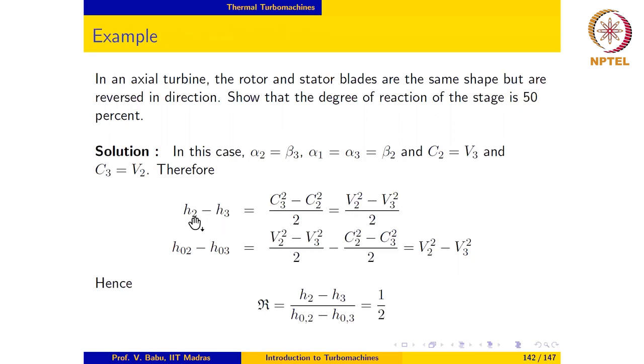Therefore the enthalpy change across the rotor, h2 minus h3, is C3 squared minus C2 squared over 2, since h plus C squared over 2 is constant for an axial machine. If we substitute for the relative velocities from here, we get this to be equal to V2 squared minus V3 squared over 2.